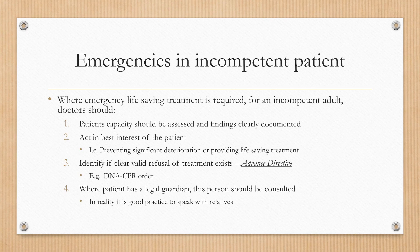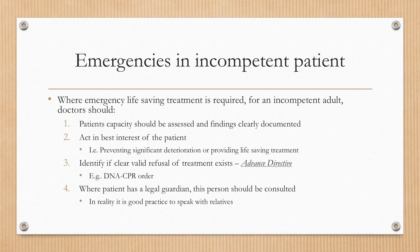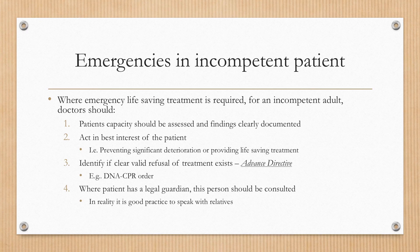Where emergency life-saving treatment is required for an incompetent adult, doctors should assess the patient's capacity and document their findings clearly in the patient's notes. They must act in the best interest of the patient — i.e. to prevent significant deterioration or provide life-saving treatment. They must identify if there is a clear, valid refusal of treatment that exists, such as an advance directive against CPR. So if a patient came in with cardiac arrest into our A&E department and they had a community DNA CPR, we must respect that previous decision and not perform cardiopulmonary resuscitation. Where a patient has a legal guardian, this person should be consulted. In reality, it's always good practice to discuss these matters with the next of kin and other relatives and friends.